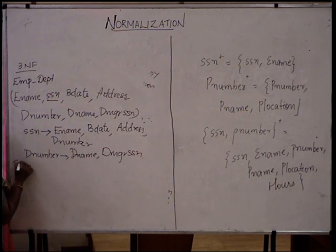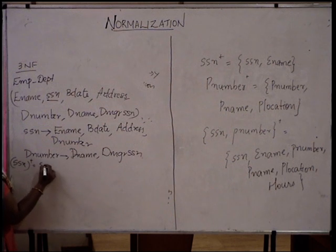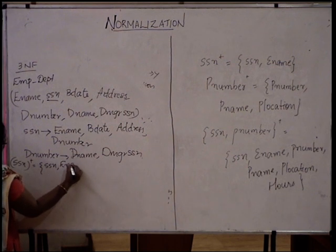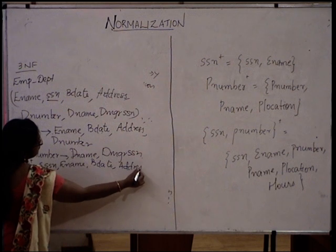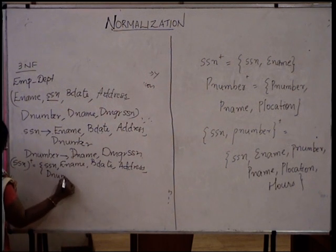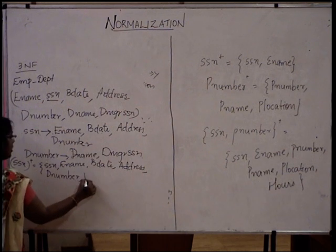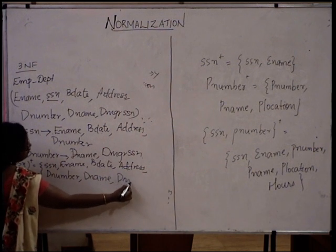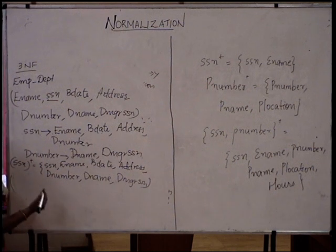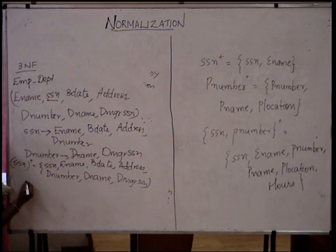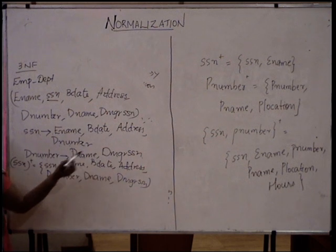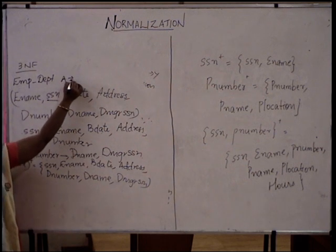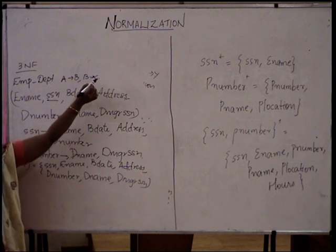First, find the SSN closure and d number closure: d number implies d name and d manager SSN. SSN is the key attribute; all others are non-key attributes. SSN implies d number, and d number implies d name and d manager SSN — this is in the form of A implies B, B implies C, which means transitive dependency.